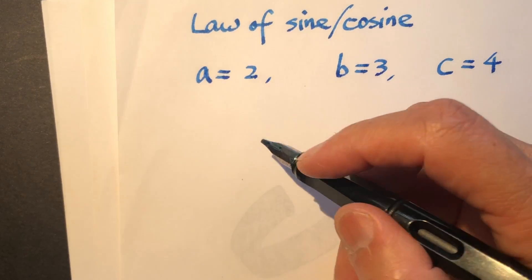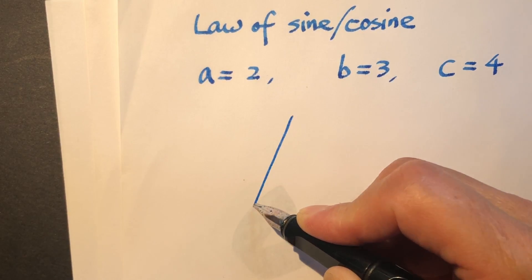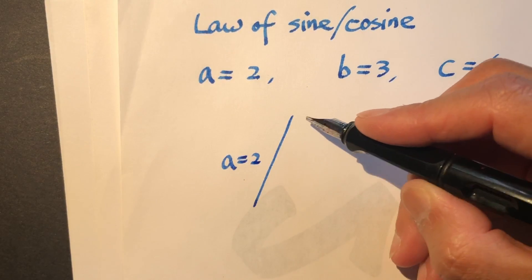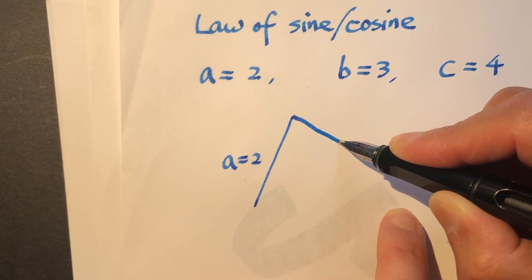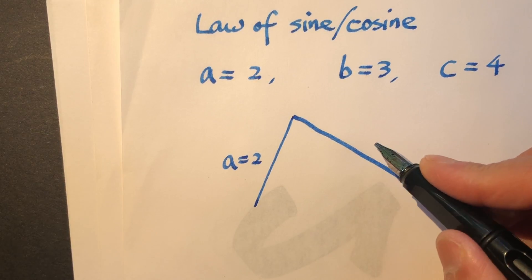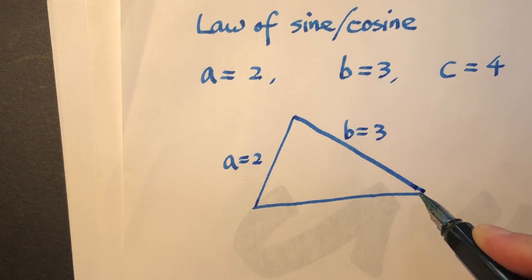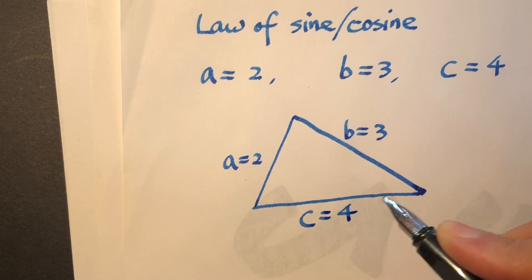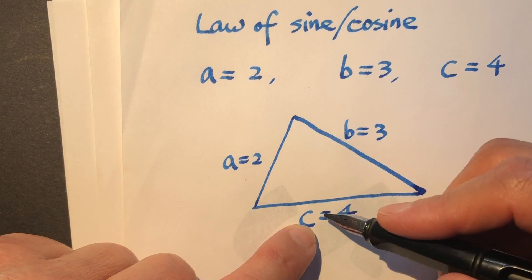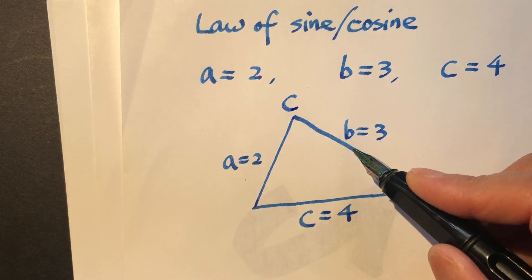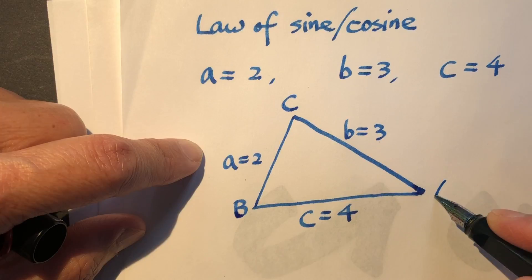Before everything, one of the very important things is to draw the triangle. We have A, let's say this is A equal to 2, and then B equal to 3, and C equal to 4. The side C is opposite to point C, opposite to side B is the angle B, and opposite to side A is the angle A.